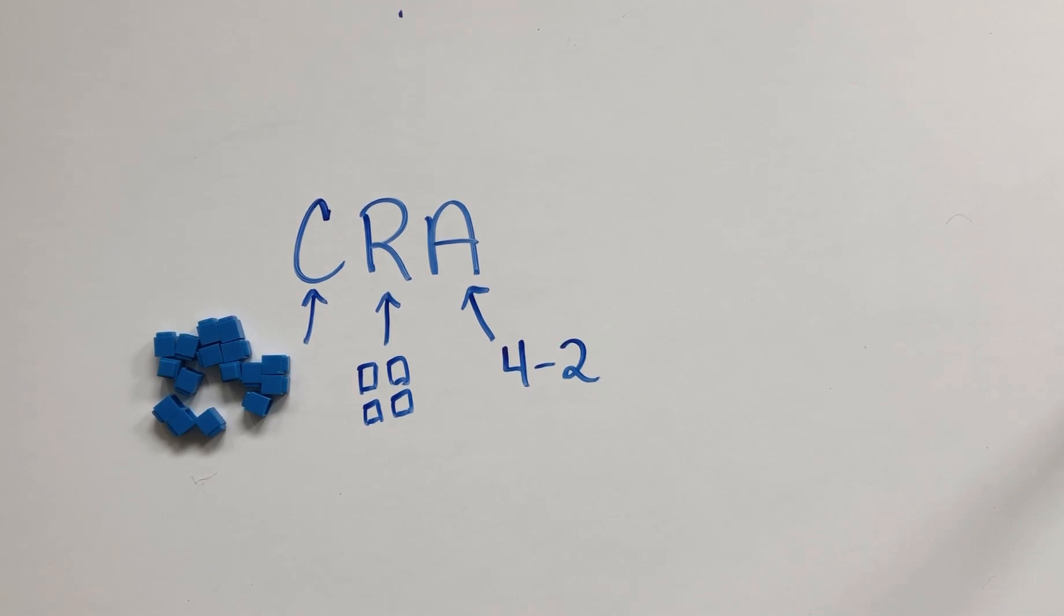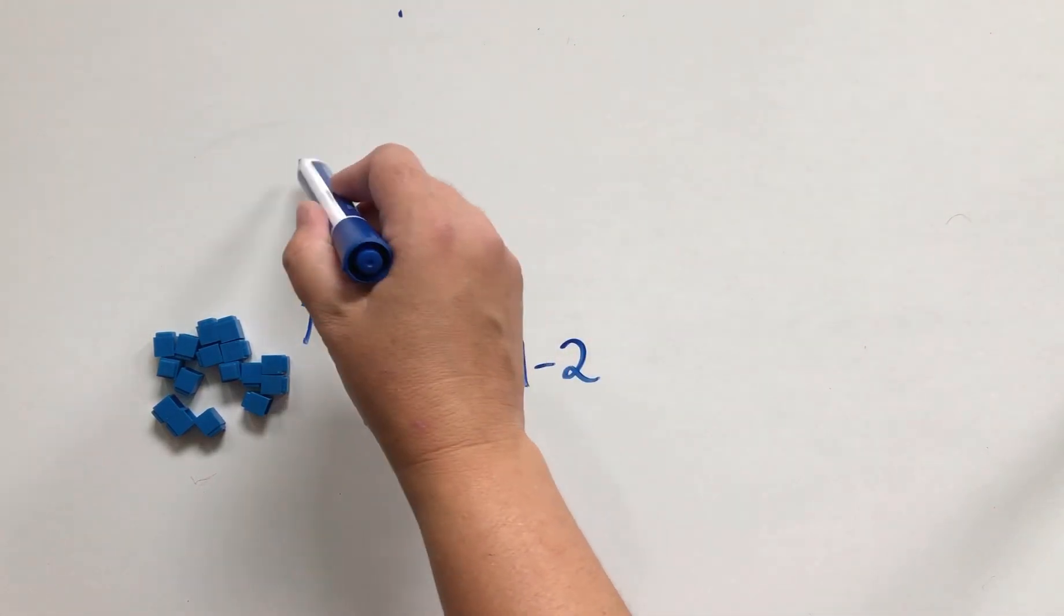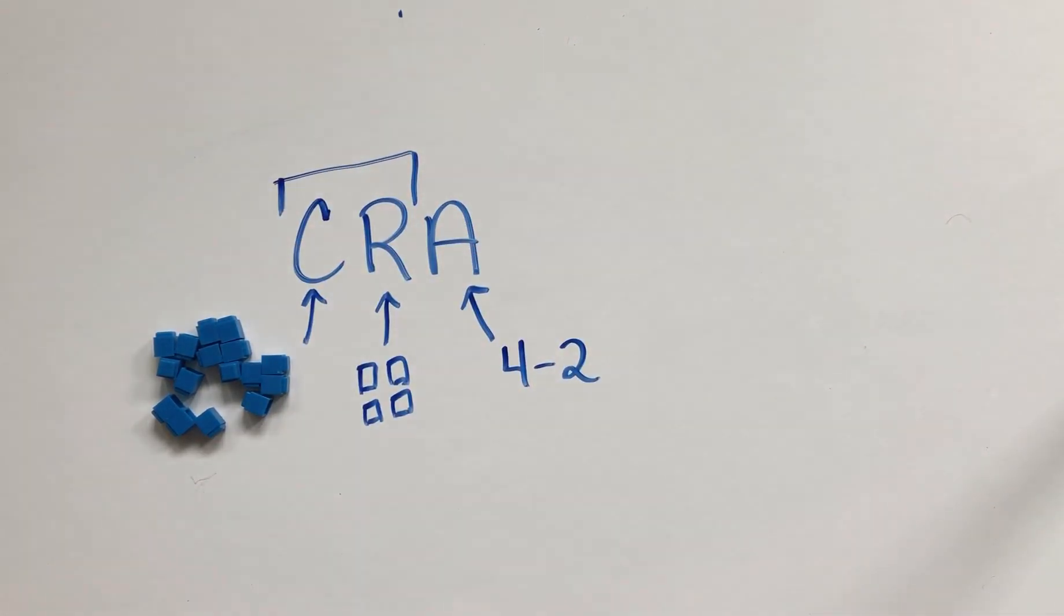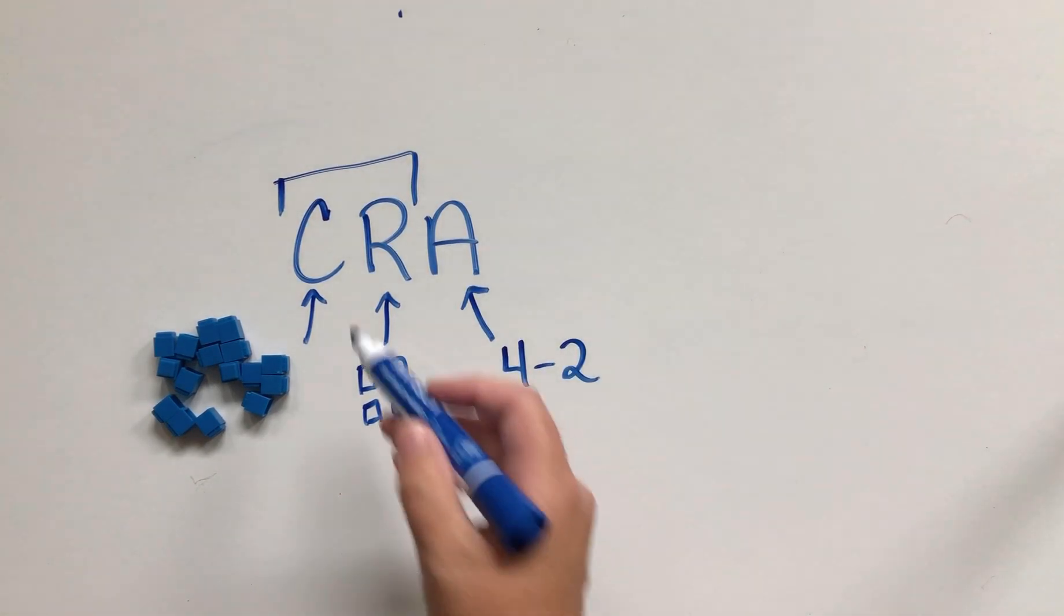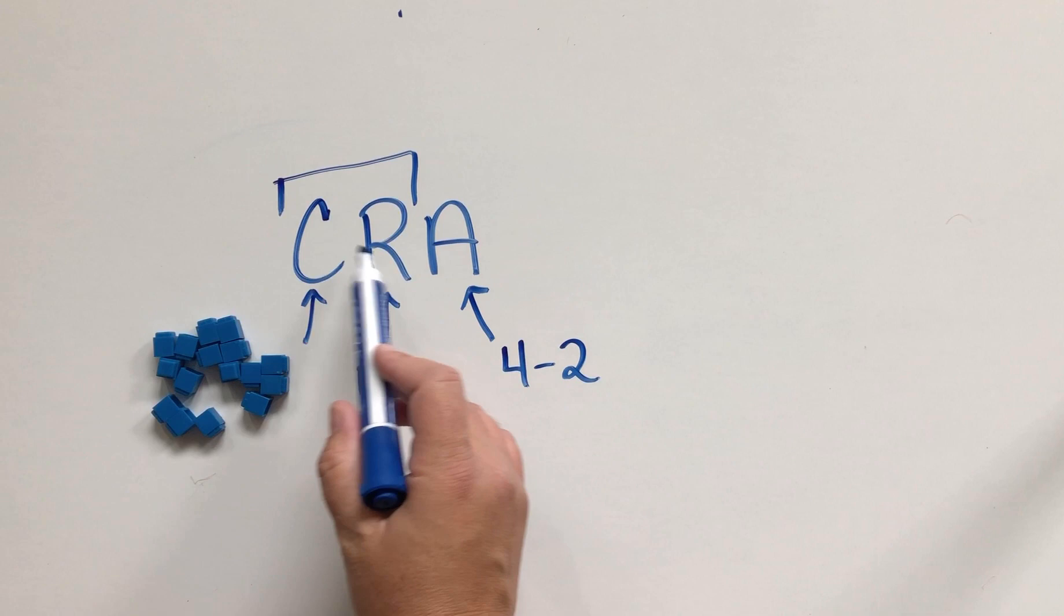Here's what happens too often in math, especially in upper elementary: we start with the abstract because we think that this is a waste of time in here. So we start with the abstract and we try to explain things in a way for our students to understand, but this creates huge gaps for the kids that really need the work with the concrete and representational phases.